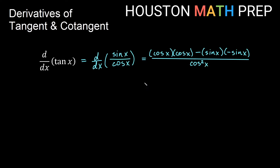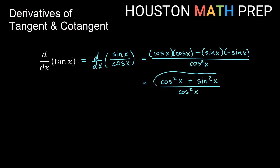Let's go ahead and combine some terms on the top. Cosine x times cosine x gives us cosine squared x. And here we have minus a negative, so that's actually going to be plus, and sine x times sine x gives us sine squared x, all divided by cosine squared x. If you remember your Pythagorean identities from trig, cosine squared of something plus sine squared of that same thing is actually one. So we get one on top.